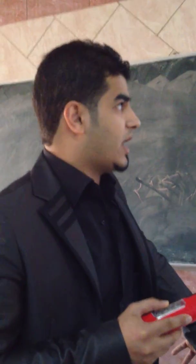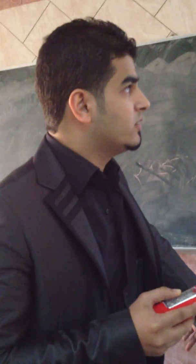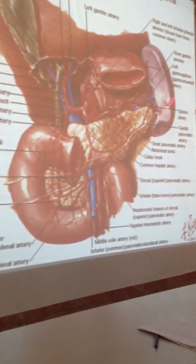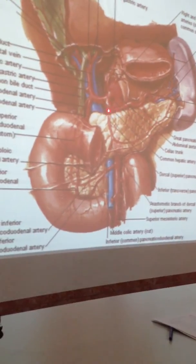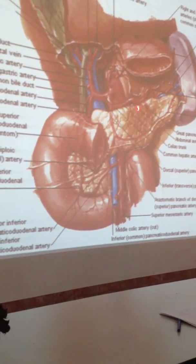The blood supply of the spleen comes from the splenic artery, which arises from the celiac trunk. It runs to the spleen along the superior border of the pancreas and divides segmentally before entering the hilum into superior, middle, and inferior polar branches. It also gives short gastric branches to the stomach, the left gastroepiploic artery, the dorsal pancreatic artery, and the great pancreatic artery.